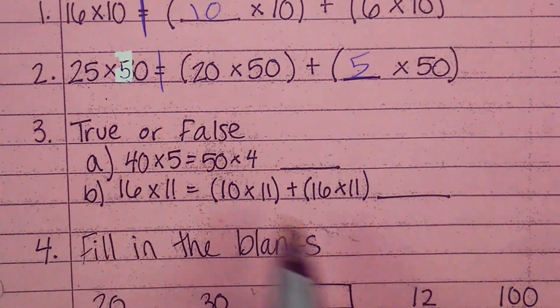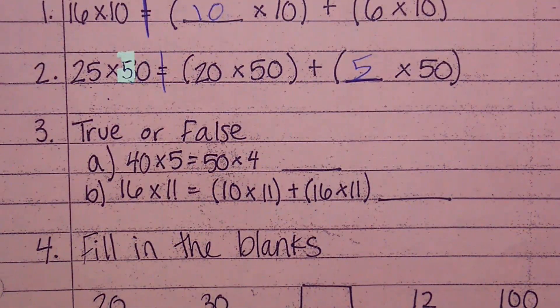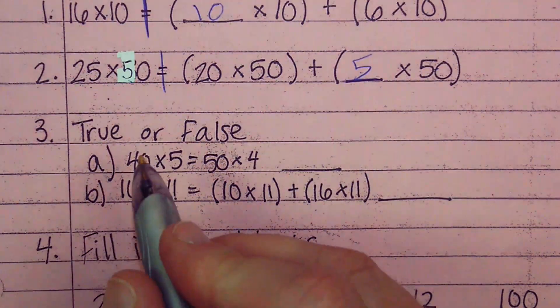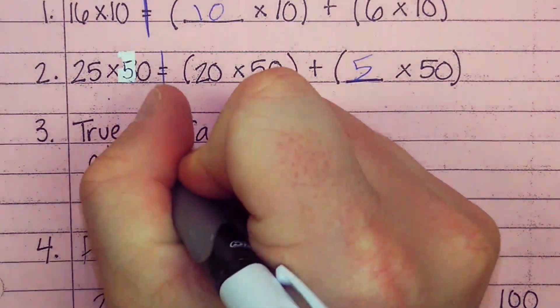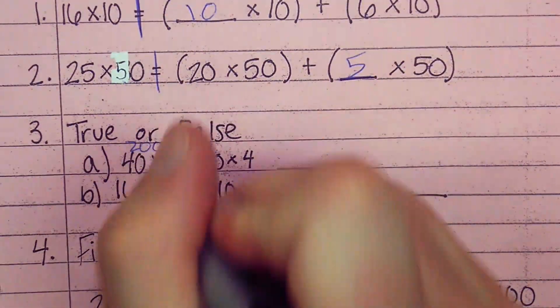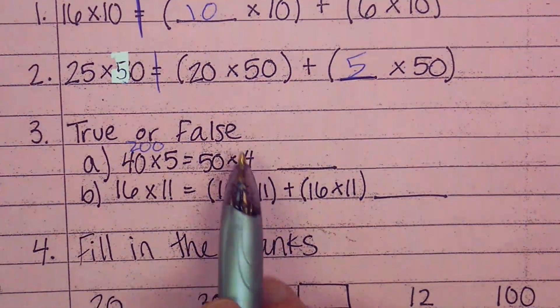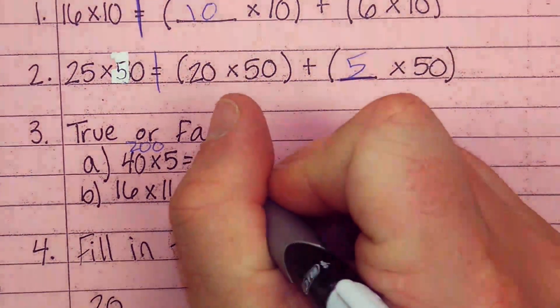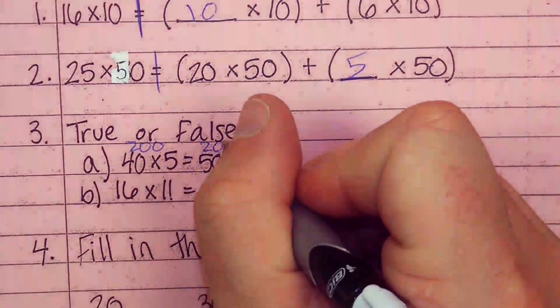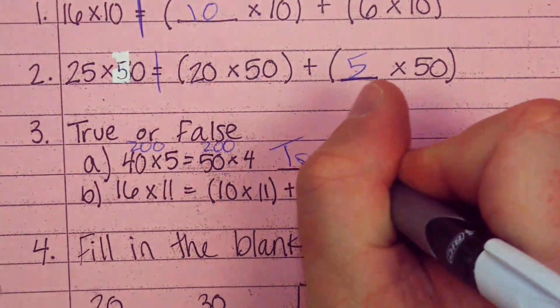Here's our true false. 40 times 5. Does that equal 50 times 4? Those numbers don't look very familiar, but let's take a look. Get rid of the 0 for a second, and we have 4 times 5. Well that's 20. Put the 0 on the end - 200. 50 times 4, get rid of that 0 for a second. 5 times 4 is 20. Put a 0 on the end. Wow! My numbers are the same, so that is true.